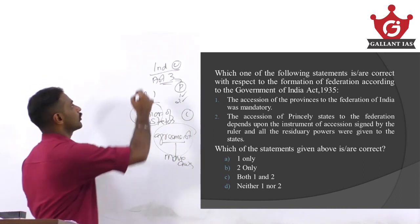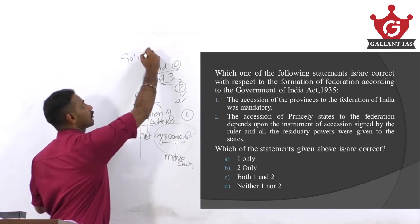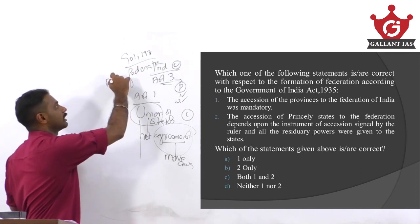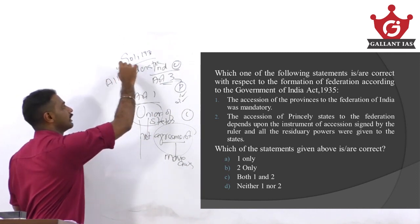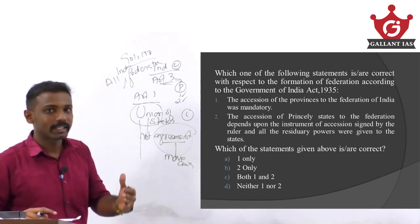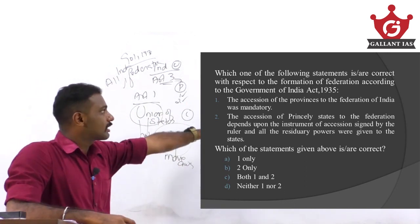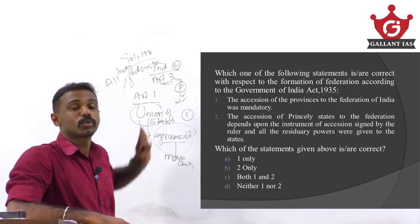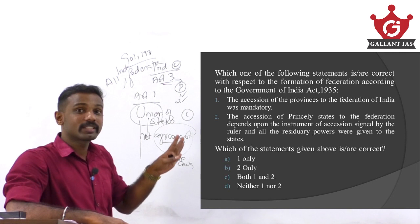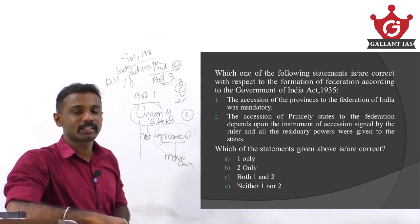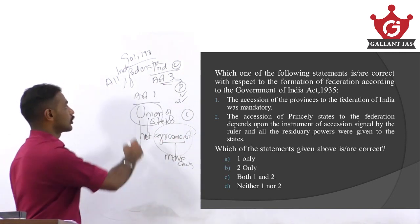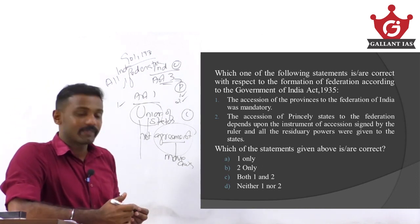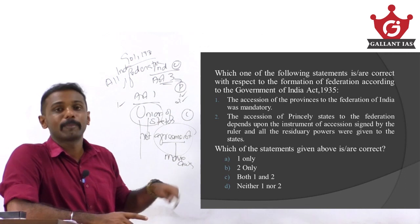According to the provisions of the Government of India Act of 1935, they planned to set up an All India Federation. Under that act, the provinces must accede to the Federation — that was a compulsory provision. Regarding the princely states, the option was given to them whether they can join or not; it is up to their wish.